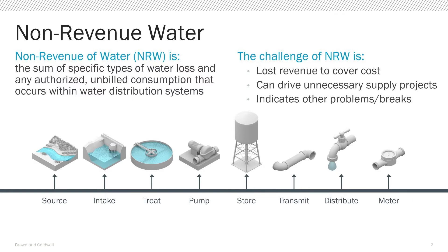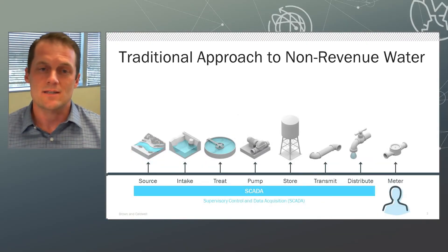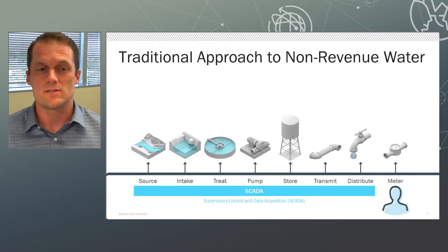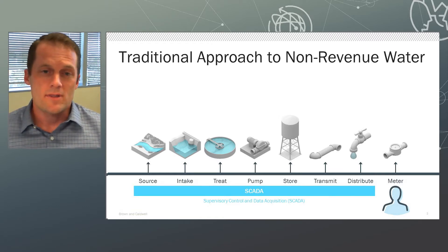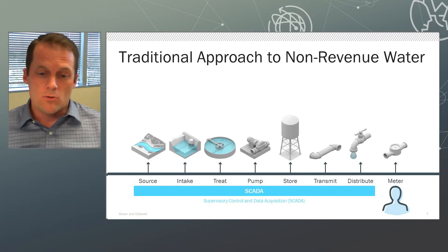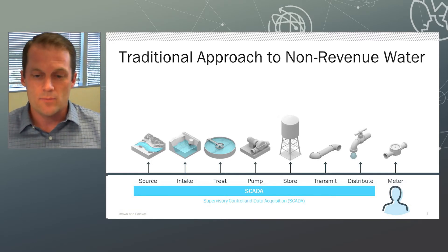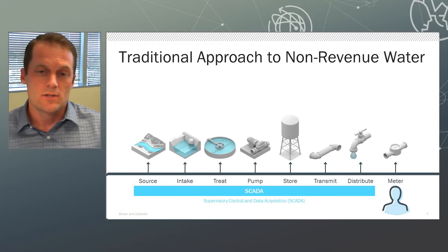The exciting thing is that technological advancements are facilitating enhanced levels of non-revenue water monitoring. Traditionally, the data used to monitor non-revenue water comes from segregated sources throughout an organization. It also includes manual meter readings at the end user, and these manual meter reads were done on a monthly basis, so it was common that non-revenue water monitoring wasn't being done any more frequently than annually, if at all. That long period between assessments represented unnecessary water loss throughout that duration.